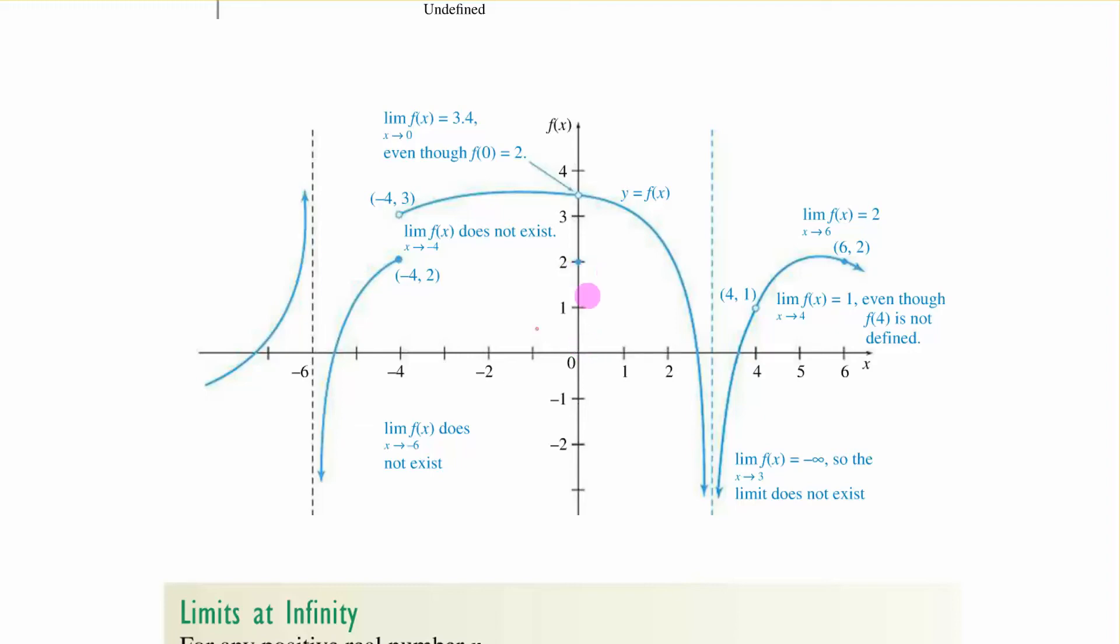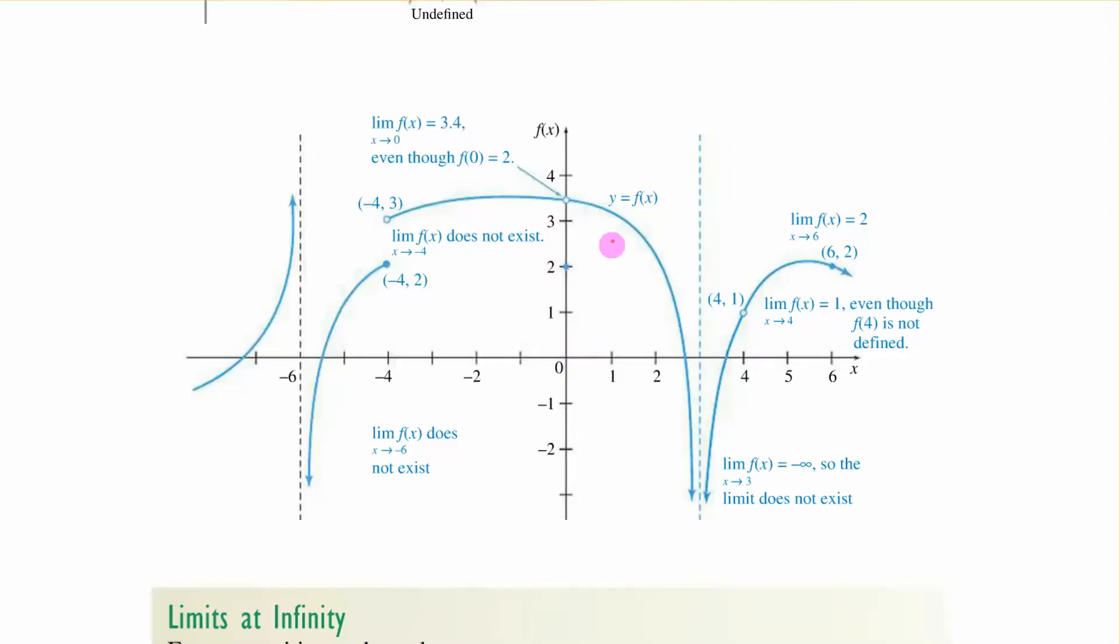So a couple of things that we've learned already. If the limit from the right and the limit from the left are not the same it would appear that the limit does not exist. That's what's happening here has to be the same on either side. Now here coming from left and right it was the same and it ended right here and that y value was 3.4. Now we also saw that f of 0 right here you can see this is defined here. It's an open circle here. The limit can exist even if the function is not defined there.